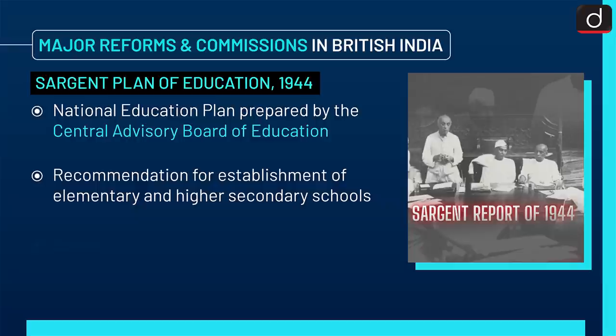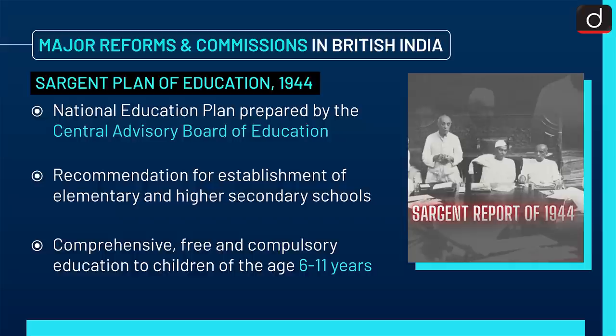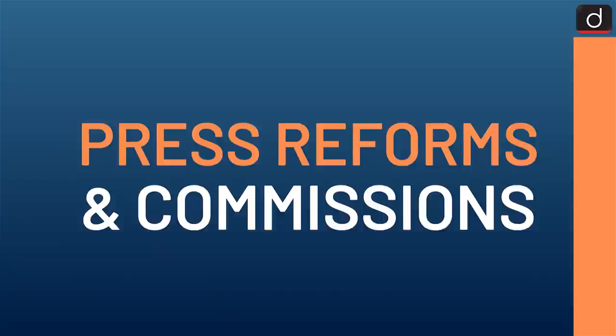Next is the Sargent Plan of Education 1944. It was the national education plan prepared by the Central Advisory Board of Education. Recommendations included establishment of elementary and higher secondary schools, and comprehensive, free and compulsory education for children aged 6 to 11 years.